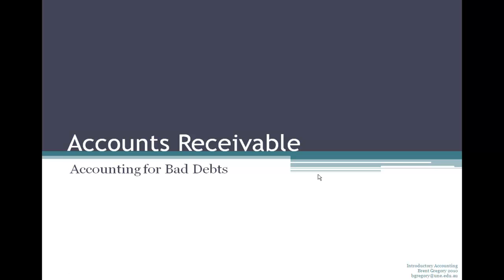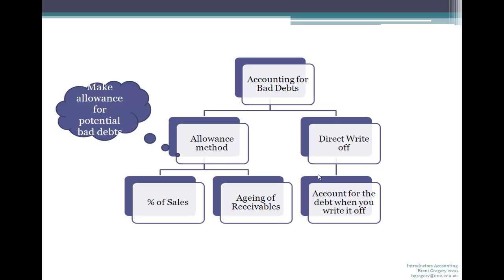Accounting for receivables — in particular, accounting for bad debts. You have two major choices for accounting for bad debts. There is the direct write-off method, where you account for the debt when you write it off and do nothing else. Or there is the allowance method.